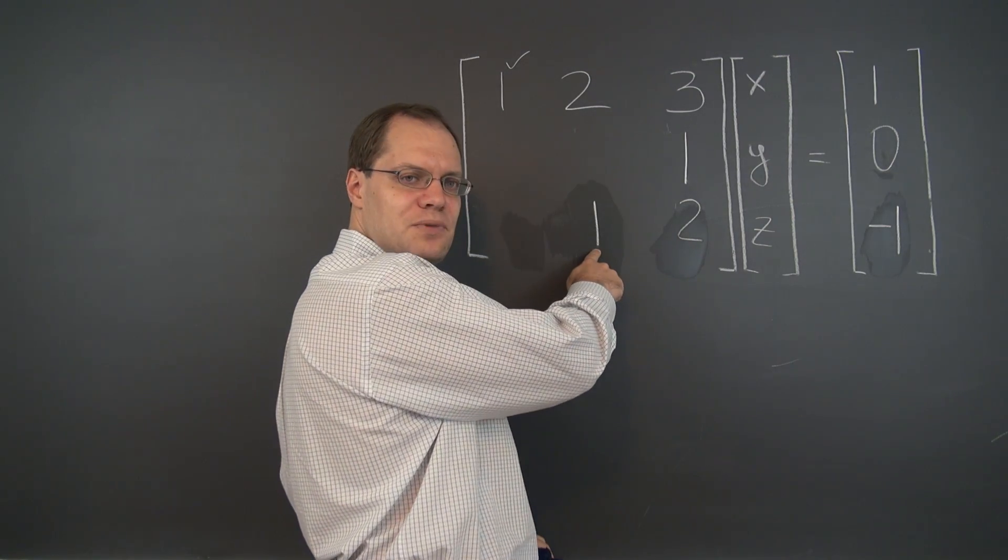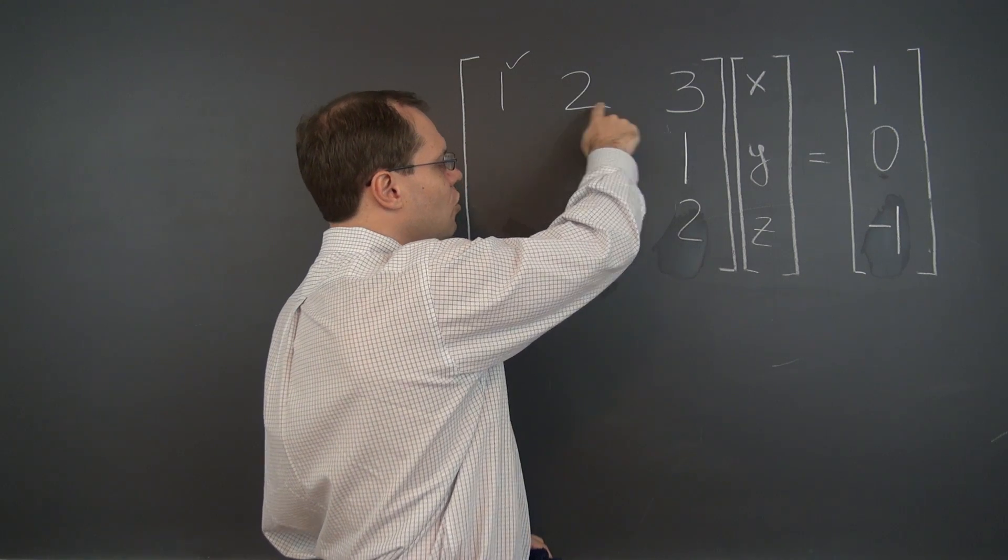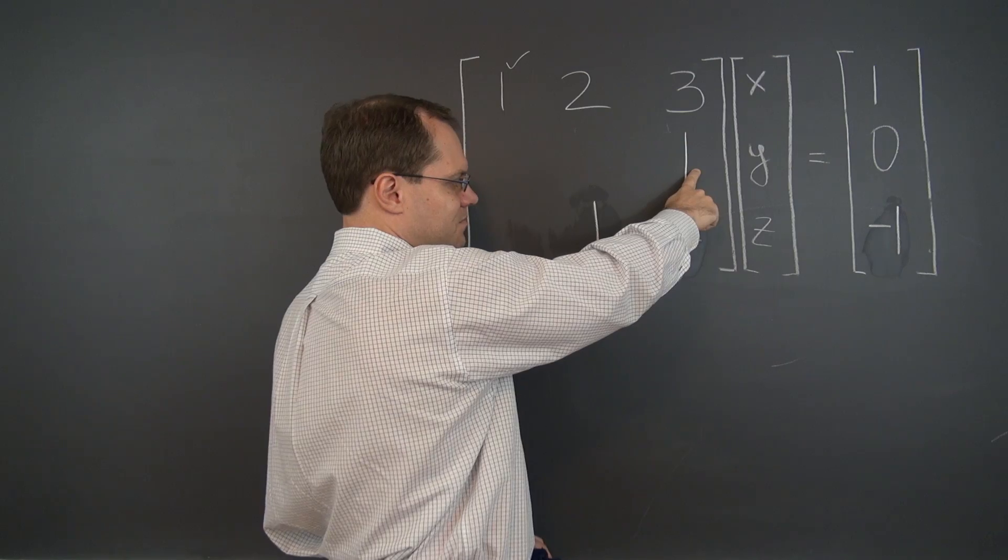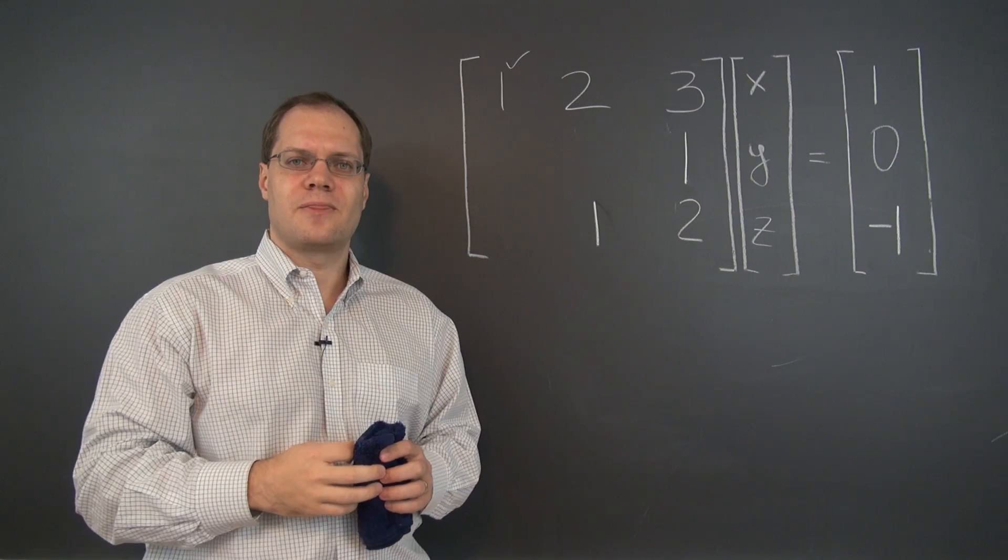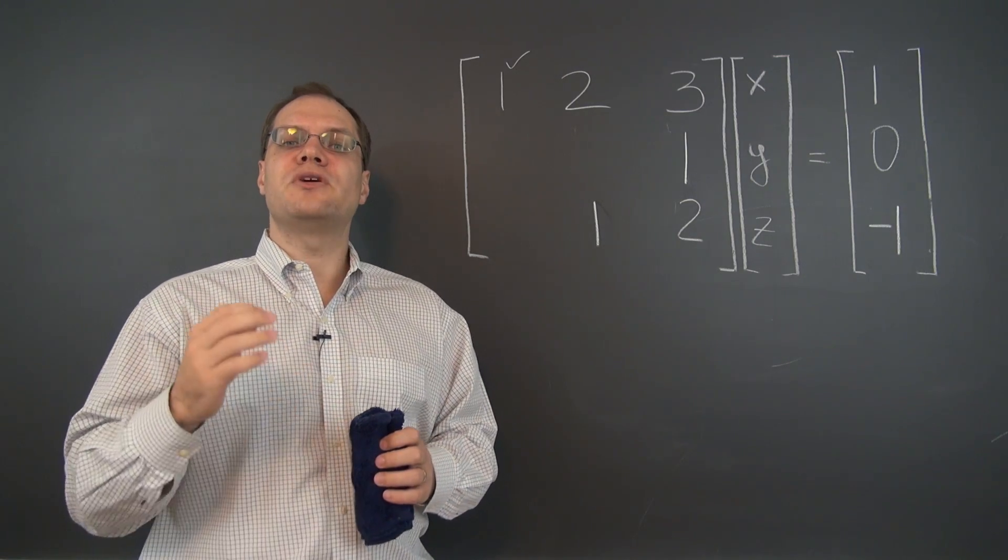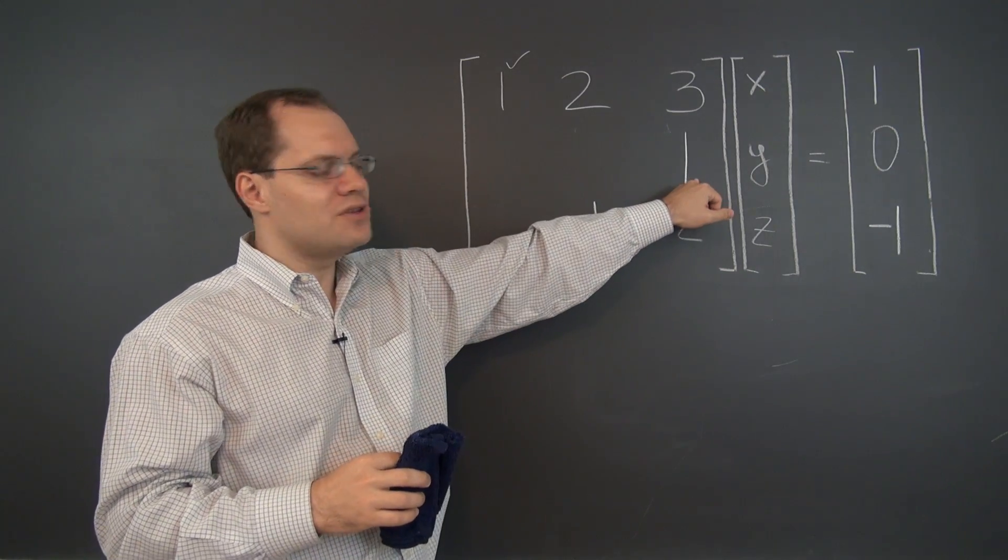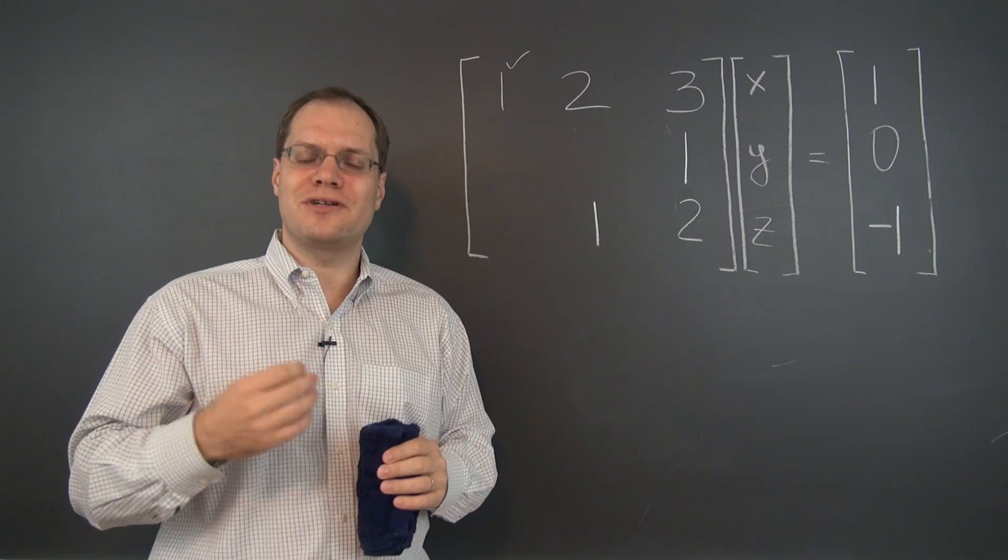You could use this one as the pivot and start eliminating everything above it in this case, or you can use this one as a pivot. Well the convention is to have pivots in consecutive rows, which would actually point to this one as our next pivot. But there is an even more important convention.